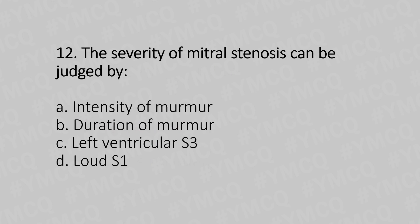Twelfth question: Grading of a heart murmur depends on — Option A: intensity of murmur. Option B: duration of the murmur. Option C: left ventricular S3. Option D: loud S1. The answer is Option B, duration of murmur.